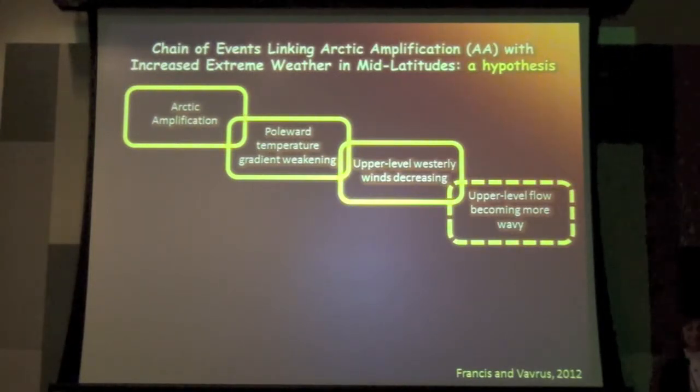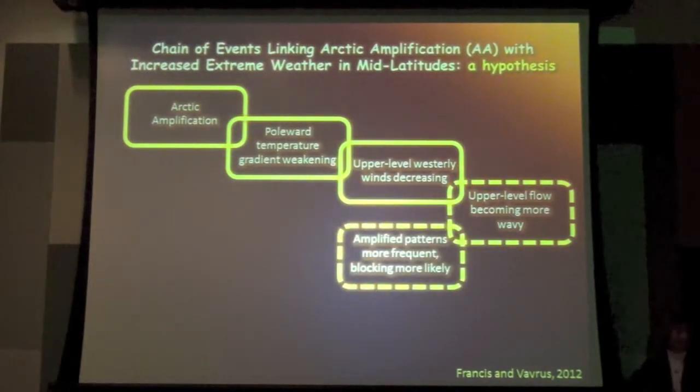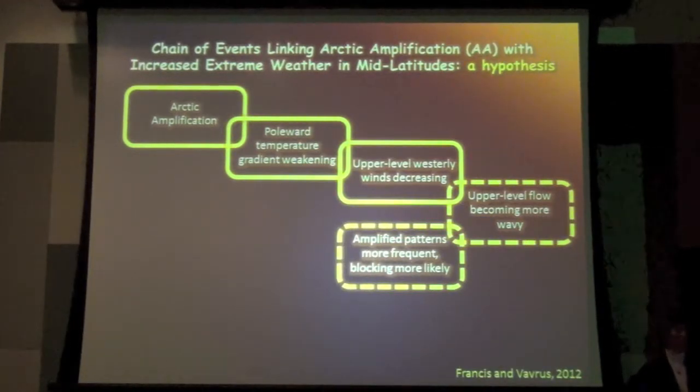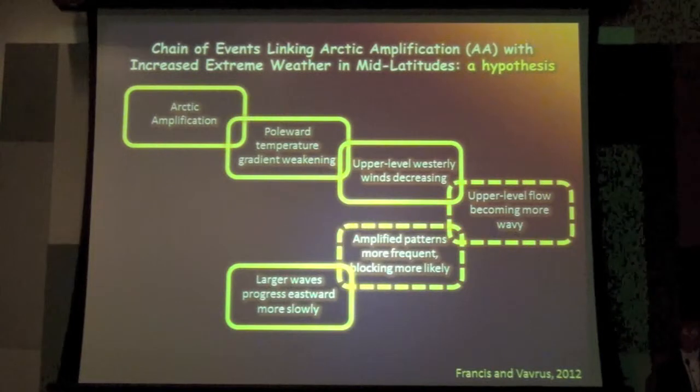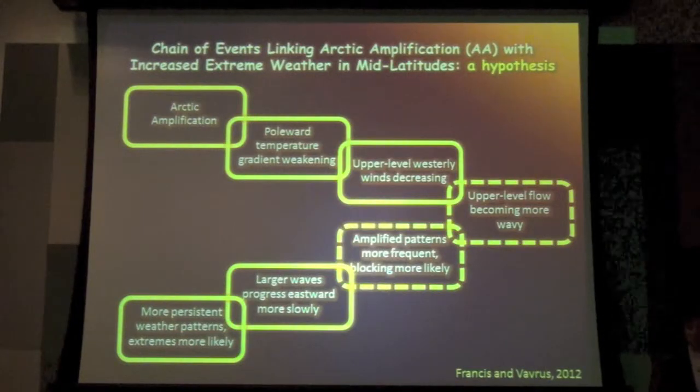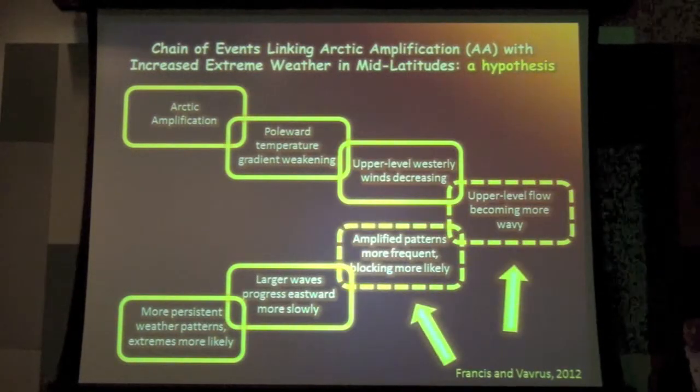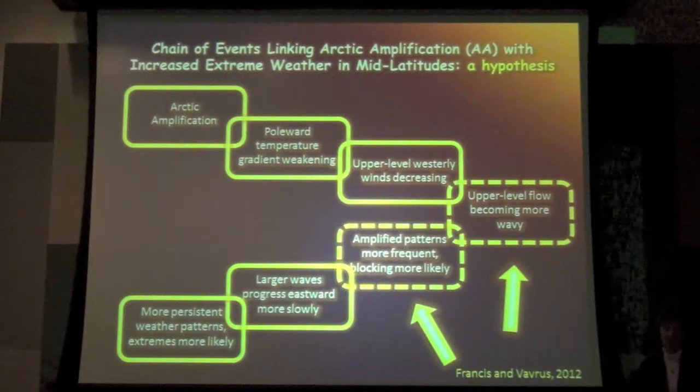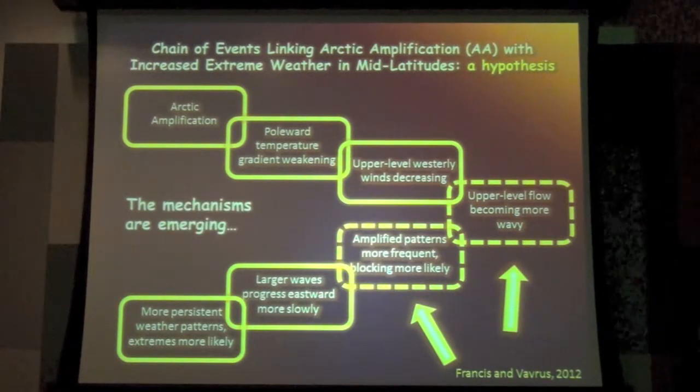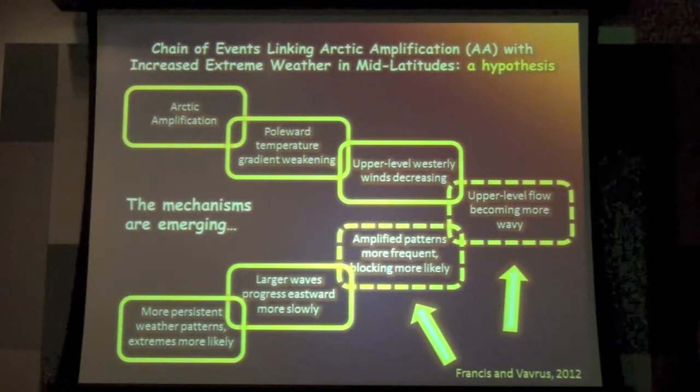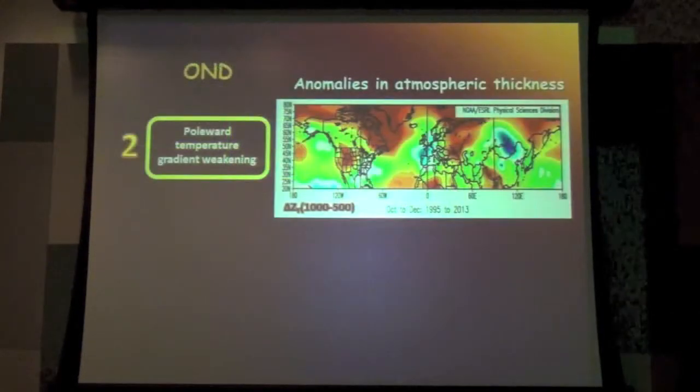Whether we're actually seeing the upper level flow become wavier or not in the real atmosphere, and whether those wavy patterns are becoming more frequent. And they sometimes lead to what we call blocks in the atmosphere. But if these two things are happening, those larger waves in the atmosphere we know move more slowly from west to east. And we know that when that happens it leads to more extreme weather. So it's really these two parts of the hypothesis that we need to do more work on. I'm going to show you some new research that we've been doing lately and others as well. We're starting to really understand some of the mechanisms that are connecting all of these things in the chain of events here.